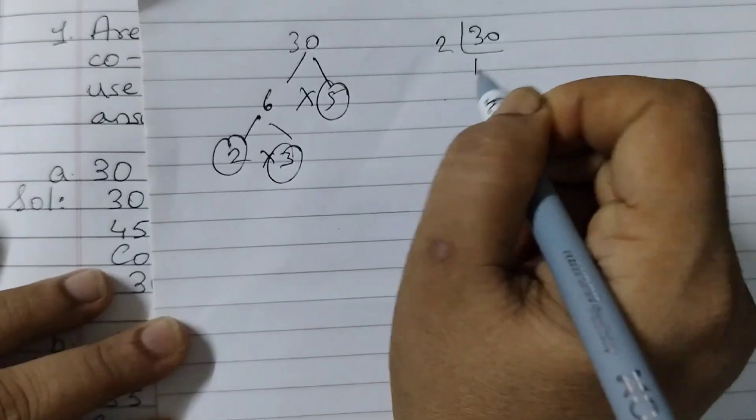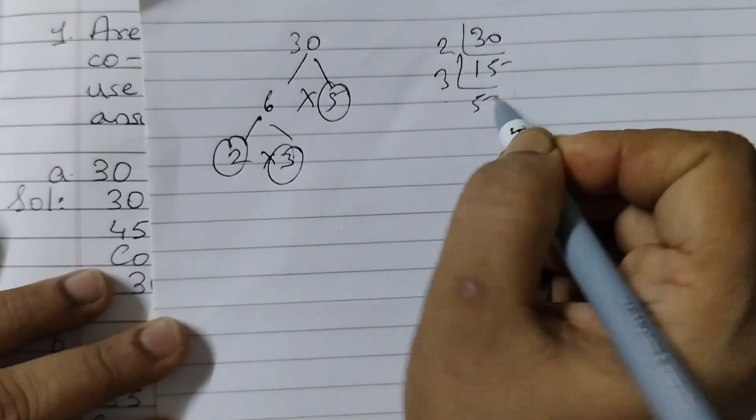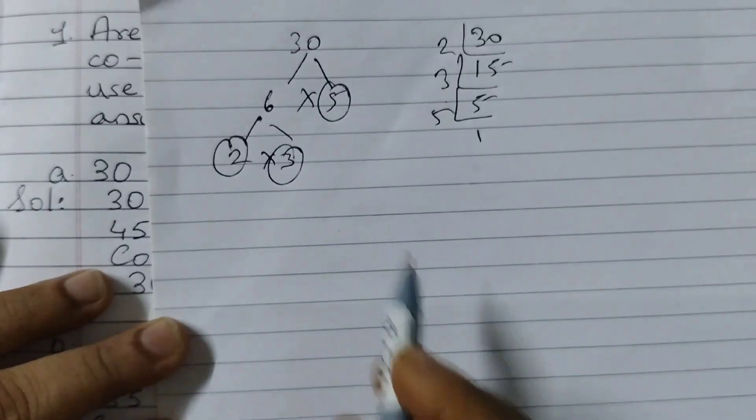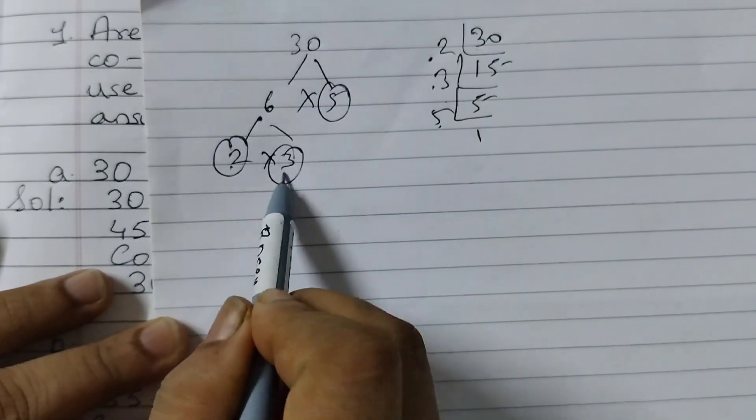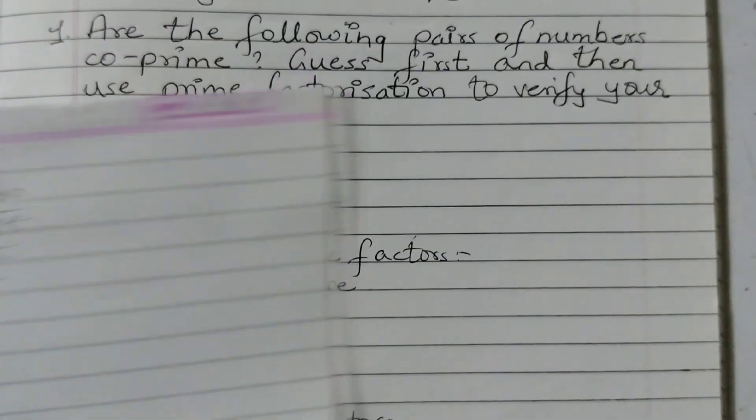30, 2 into 15, 30, 3 fives are 15, 5 ones are 5, right. So 2, 3, 5, 2, 3, 5, 2, 3, 5. It's your wish how you would like to do it.